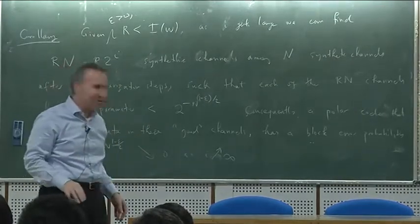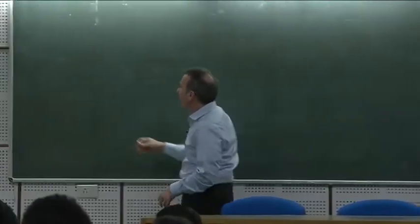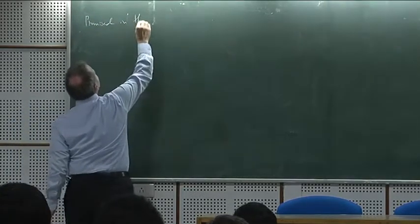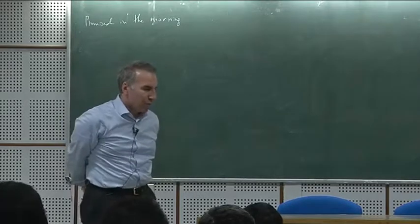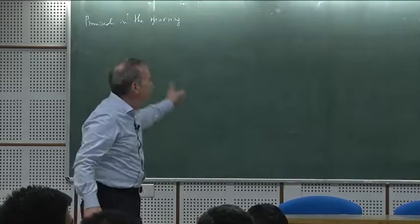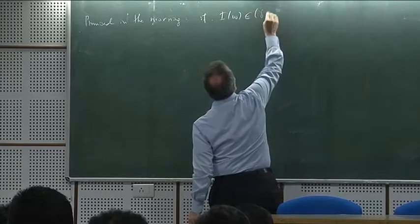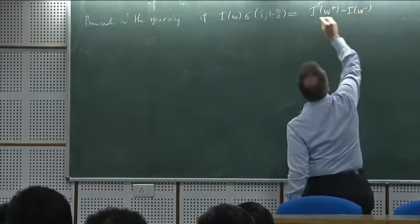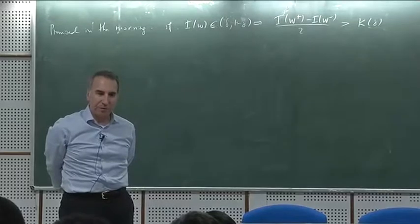Feel free to ask; I have no problem with interruptions. So what I promised was the following. This was important for both proofs I gave you — both the proof based on second moments and the proof based on martingales — we had to know this morning's promise: that if I_W is moderate, then I_W plus minus I_W minus cannot be too small. There exists kappa of delta such that this holds, for some non-zero, non-negative kappa.